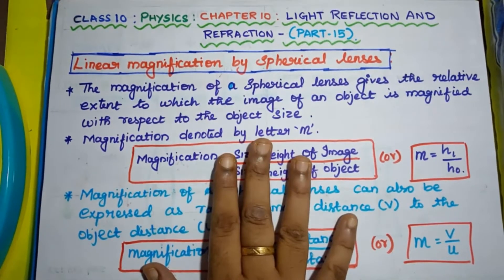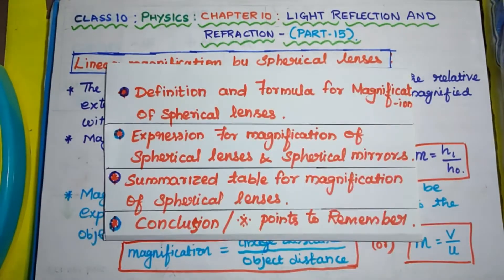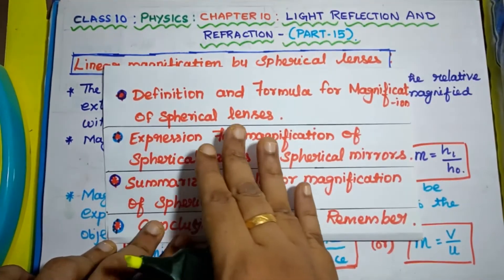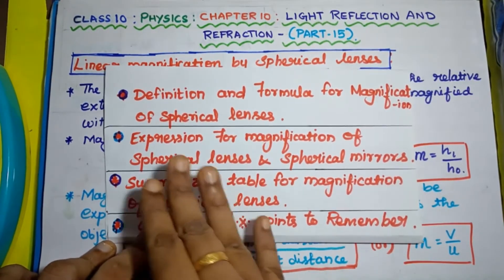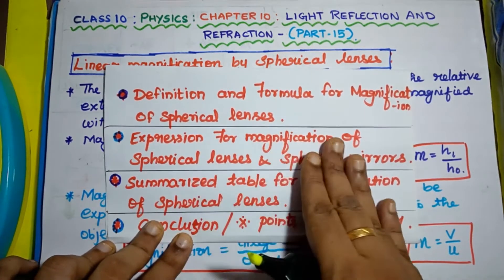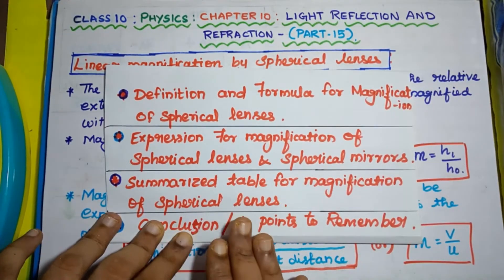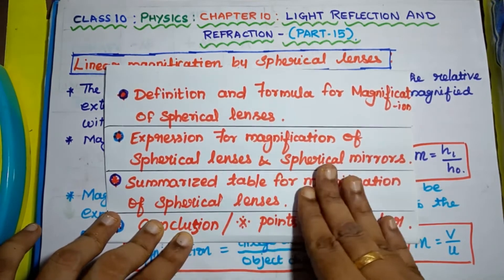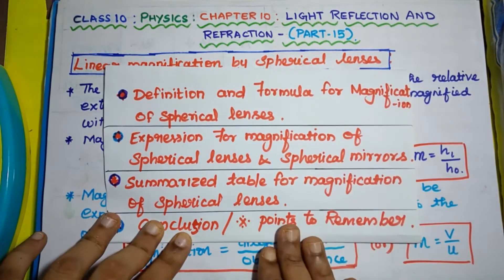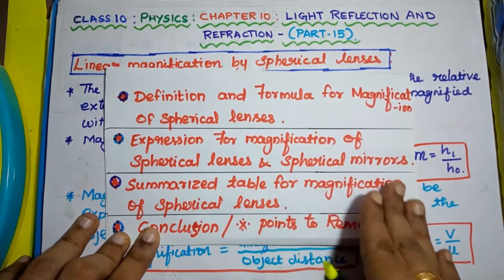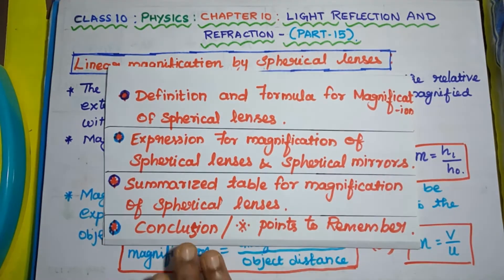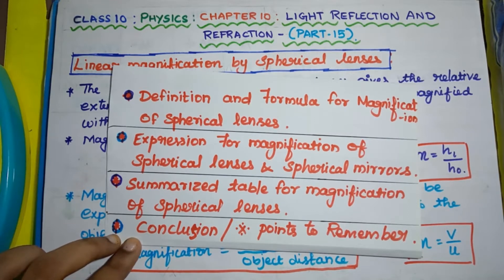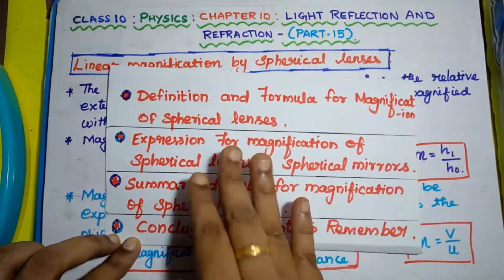We are going to discuss this topic through the following steps. First, we will see the definition and formula for magnification of spherical lenses. Next, we will derive an expression for magnification of spherical lenses. Through this expression, we will see how the formula for spherical lenses differs from spherical mirrors. Then we will see a summarized table, and finally some important conclusion points regarding magnification of spherical lenses.